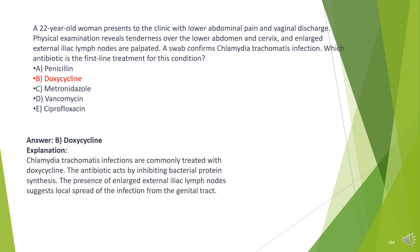The answer is B. Doxycycline. Chlamydia trachomatis infections are commonly treated with doxycycline. The antibiotic acts by inhibiting bacterial protein synthesis. The presence of enlarged external iliac lymph nodes suggests local spread of the infection from the genital tract.